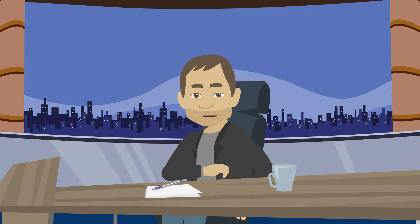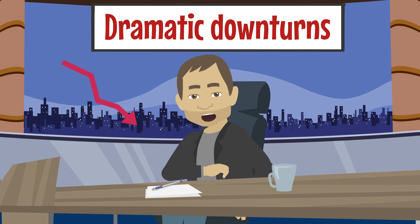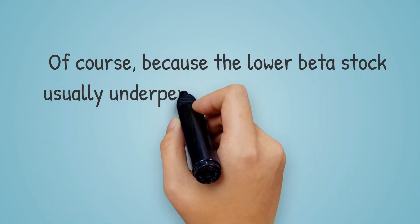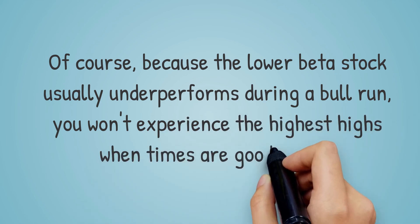Lastly, put both high and low beta stocks in your portfolio for adequate diversification. Diversify your portfolio and be prepared for any dramatic downturns in the market. A mix of high beta stocks as well as low beta stocks will help you weather anything that comes. Of course, because the lower beta stock usually underperforms during a bull run, you won't experience the highest highs when times are good either.